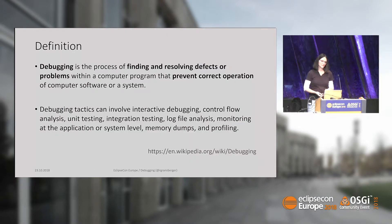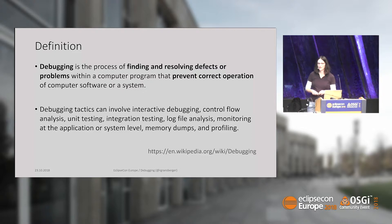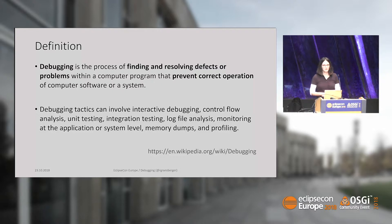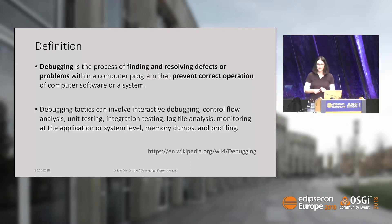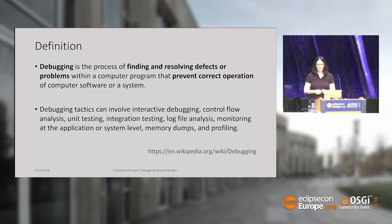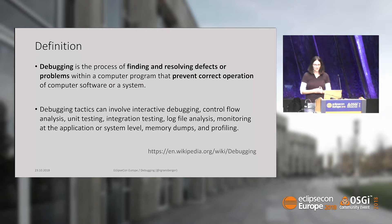Debugging is defined as the process of finding and resolving defects or problems in a computer program that prevent correct operation of a computer or system. There are several debugging tactics. Today we'll only do interactive debugging, but there are other techniques — like you probably all started with doing system print lines to see what's happening in your program.